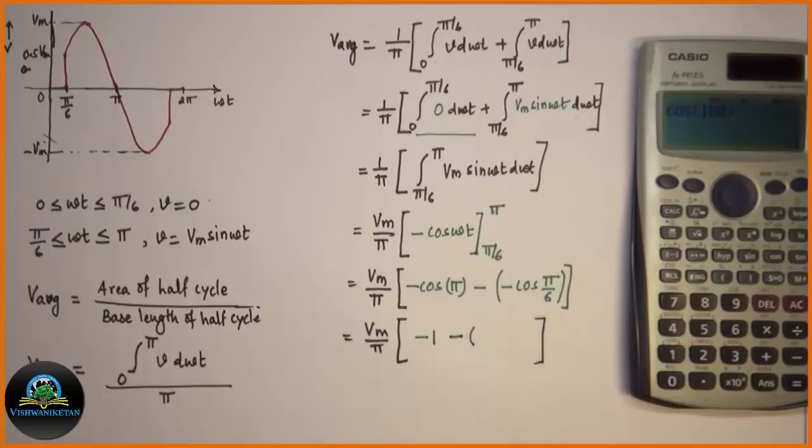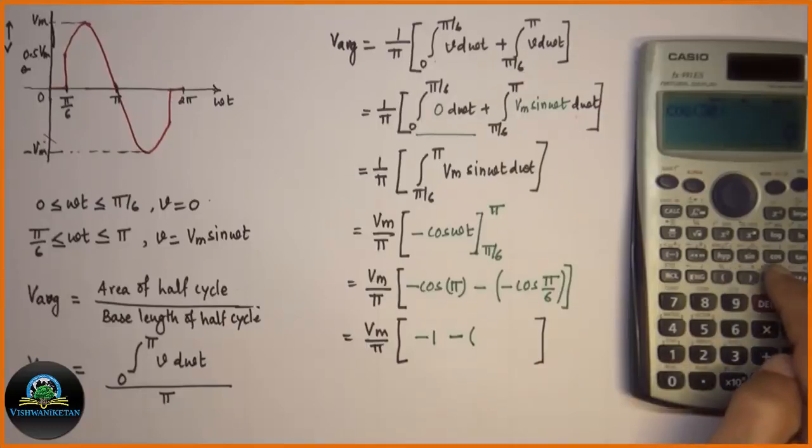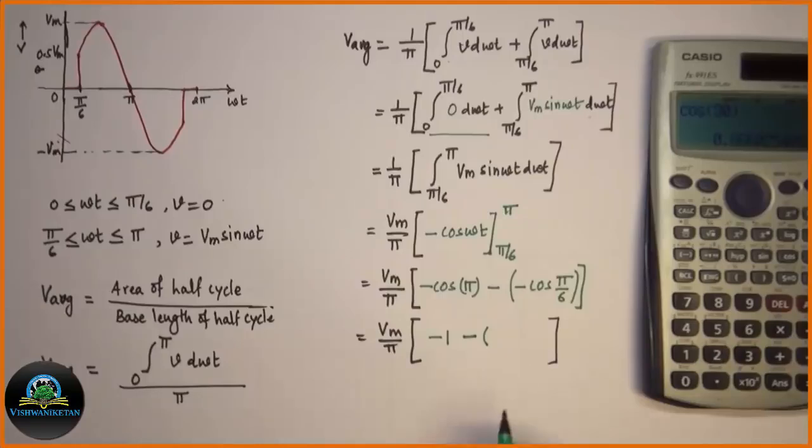Cos of pi by 6, so cos of pi by 6 that is cos of 30. I will get as 0.866, so minus 0.866.